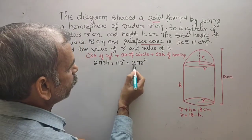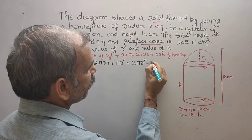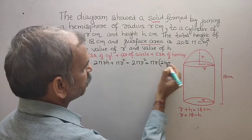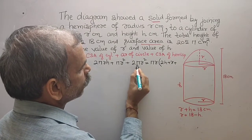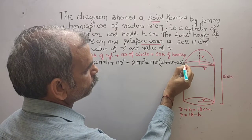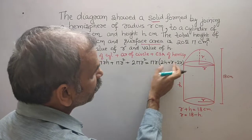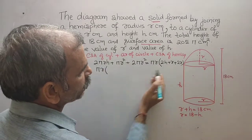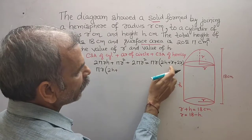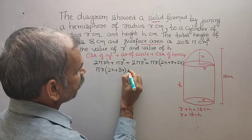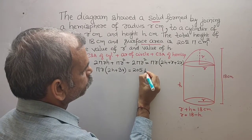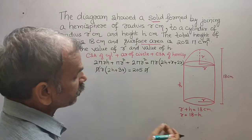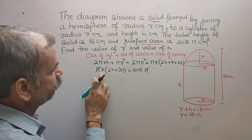Now π and r are common factors. Factoring them out gives: πr(2h + r + 2r) = 205π. Combining the r terms: πr(2h + 3r) = 205π.